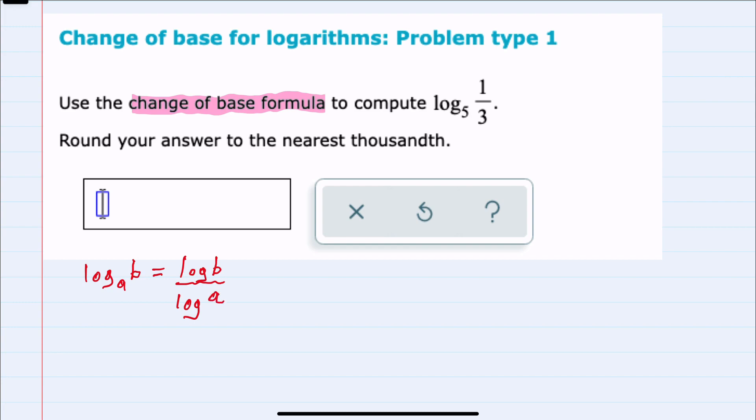So we can change the base by writing the log twice as a quotient, keeping what we're taking the log of in the top and moving the base to the bottom.